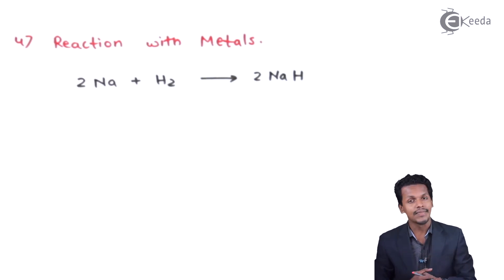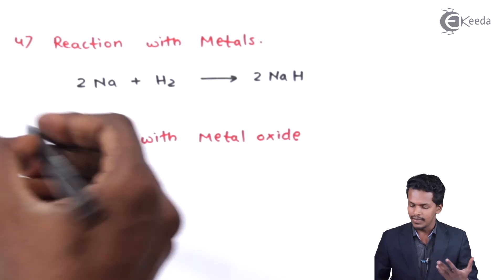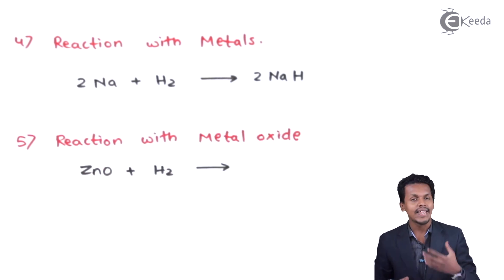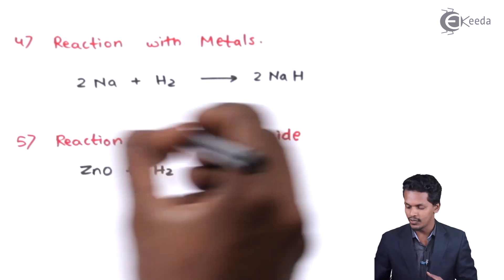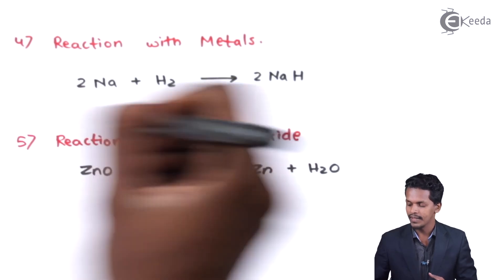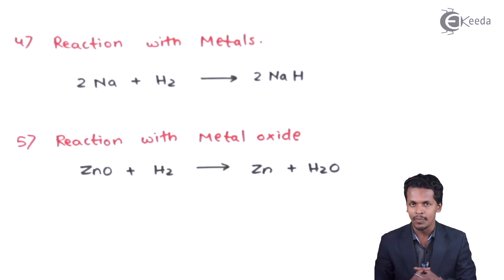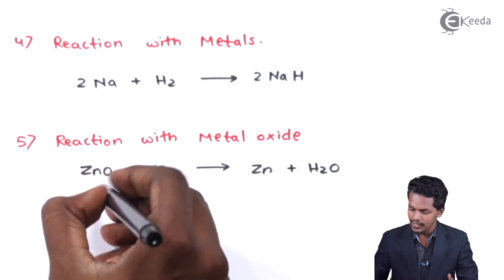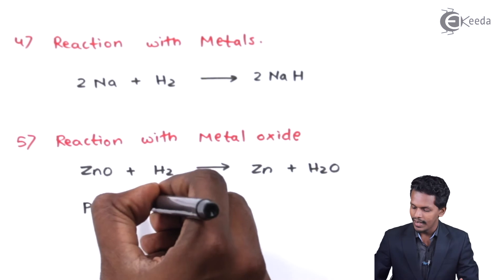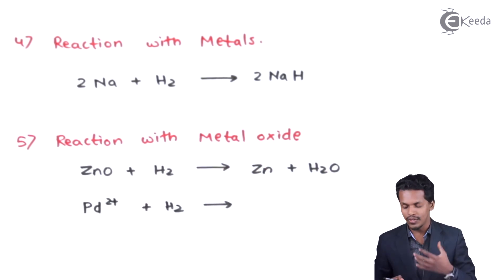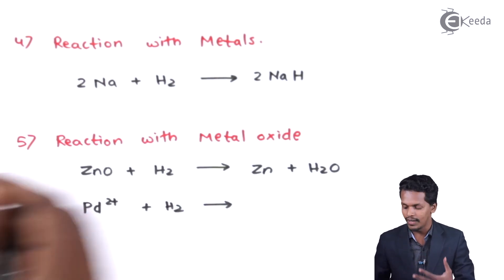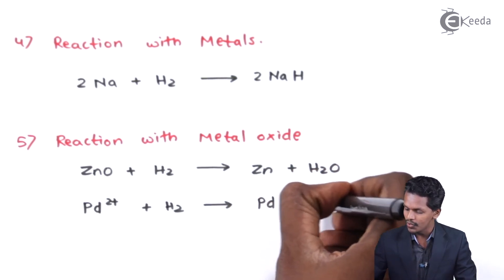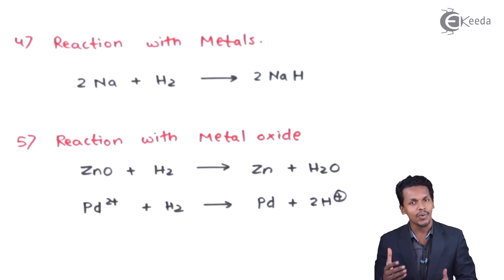Now let's discuss what happens when hydrogen is reacted with metal oxides. For example, considering ZnO — if we introduce hydrogen, it reduces zinc oxide to form zinc along with water. Hydrogen acts as a reducing agent here. It can also react with ions — for example, Pd²⁺ reacted with H₂ acts as a reducing agent, converting palladium from +2 to palladium metal along with 2H⁺.